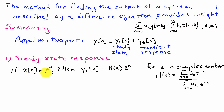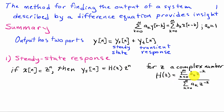If we consider the general case of an input taking the form z^n, where z is a complex number, then the steady-state output is h(z) times z^n. The function h(z) has the form: the sum from k equals 0 to M of b_k times z^(-k), divided by the sum from k equals 0 to N of a_k times z^(-k).